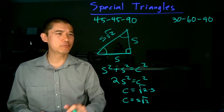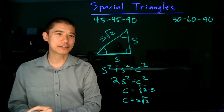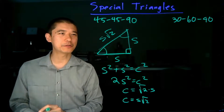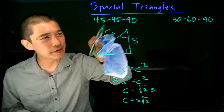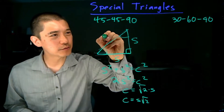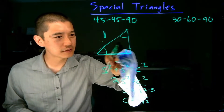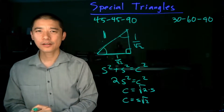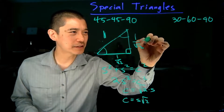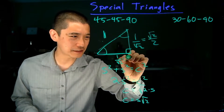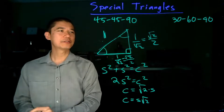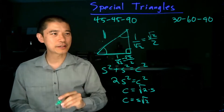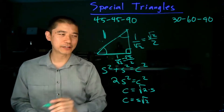We're specifically going to be interested in when the hypotenuse has length 1. In order for this picture to have hypotenuse length 1, we need the value of S to be 1 over the square root of 2. If we substitute that in, the hypotenuse becomes 1, and each leg becomes 1 over the square root of 2, which with rationalization can be written as square root of 2 over 2. So in the 45-45-90 triangle with hypotenuse 1, the two legs each have length square root of 2 over 2.